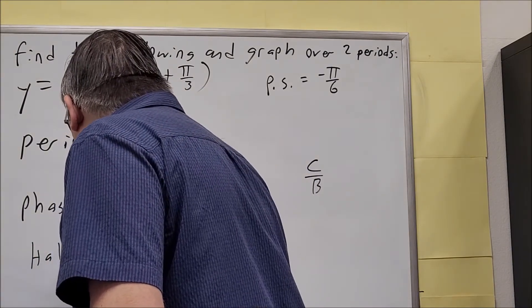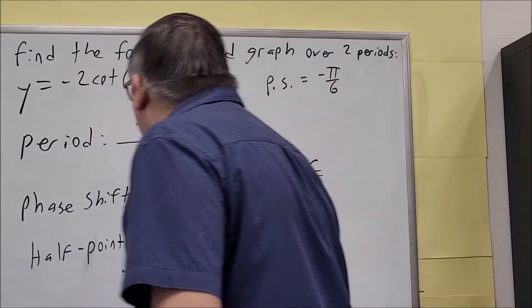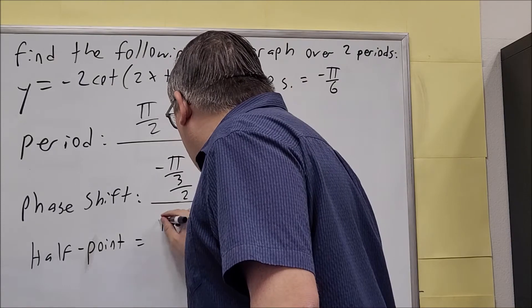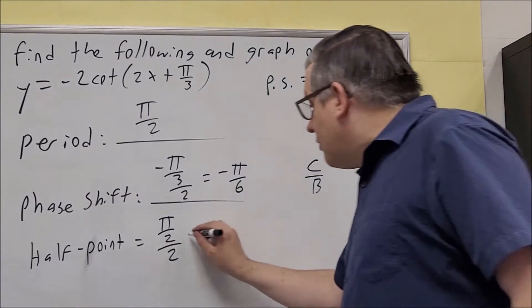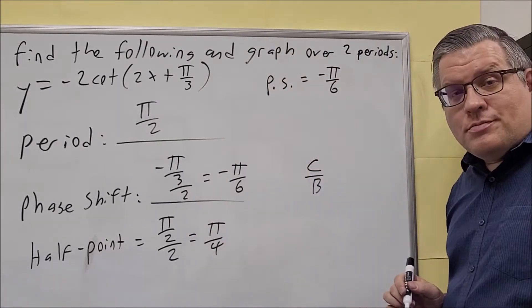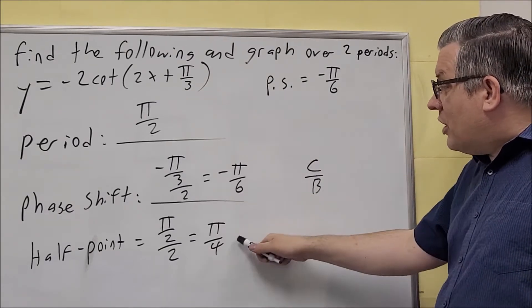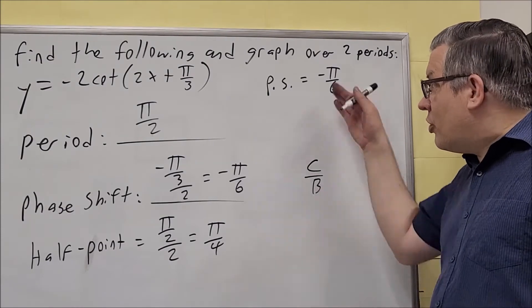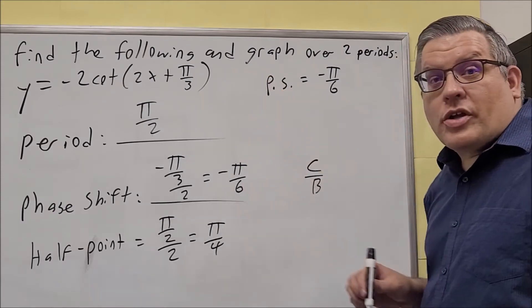So half point is going to be always period divided by 2. The period is π over 2, and you're dividing it by 2. So when you flip that, it's going to give you π over 4. Now, we notice that we have phase shift and half point. Both of them have two different denominators. It's always best if you can get those to be the same denominator. That'll make it easier when you add with common denominators.